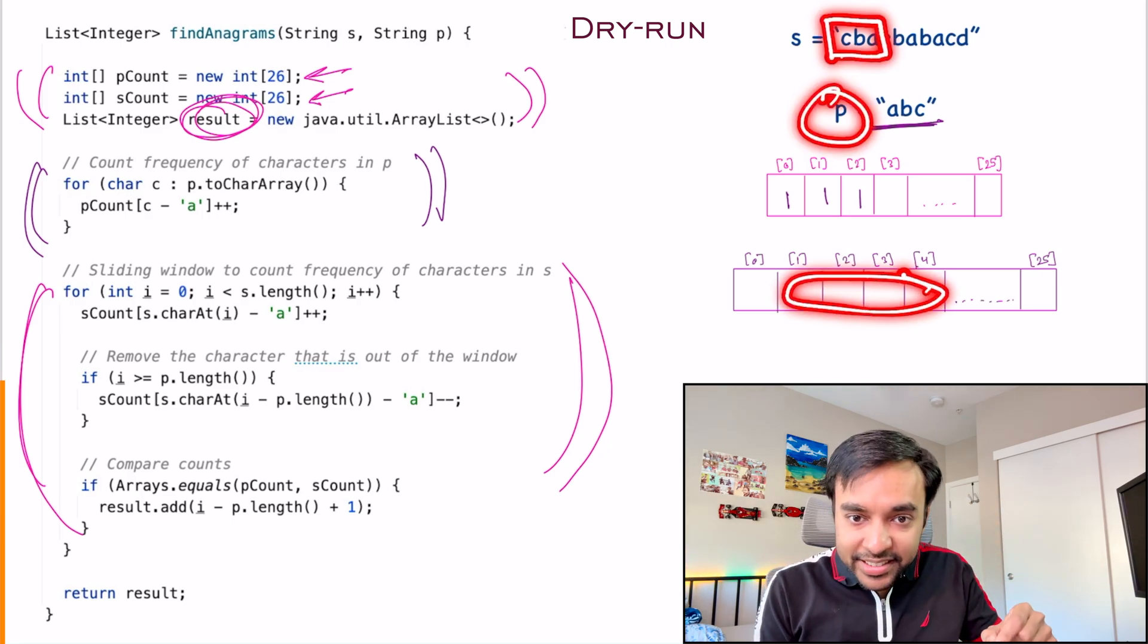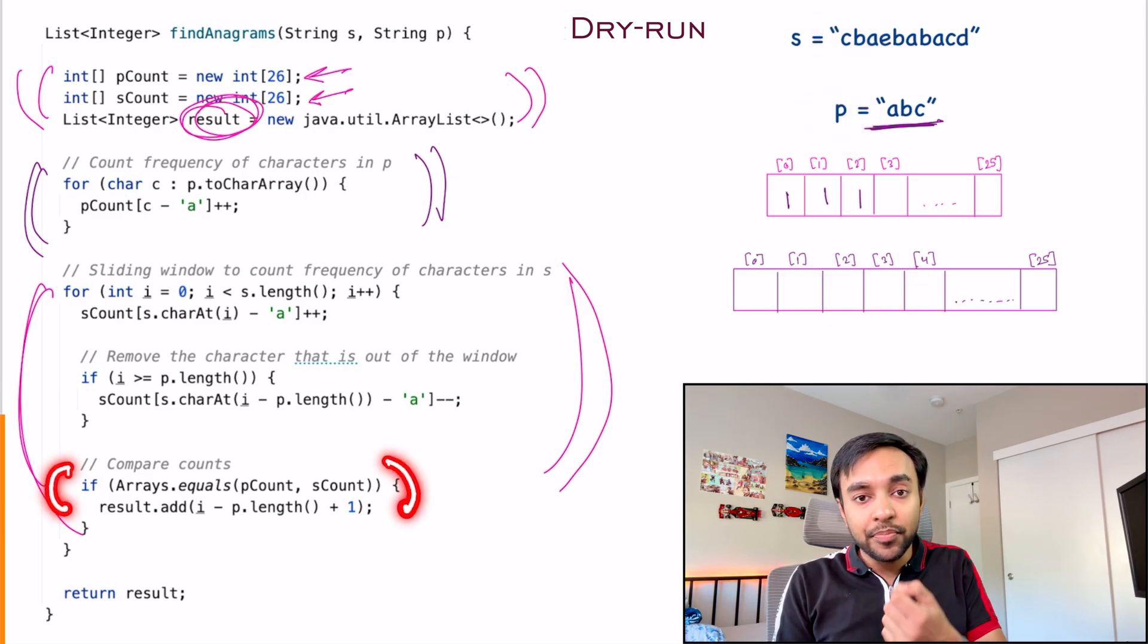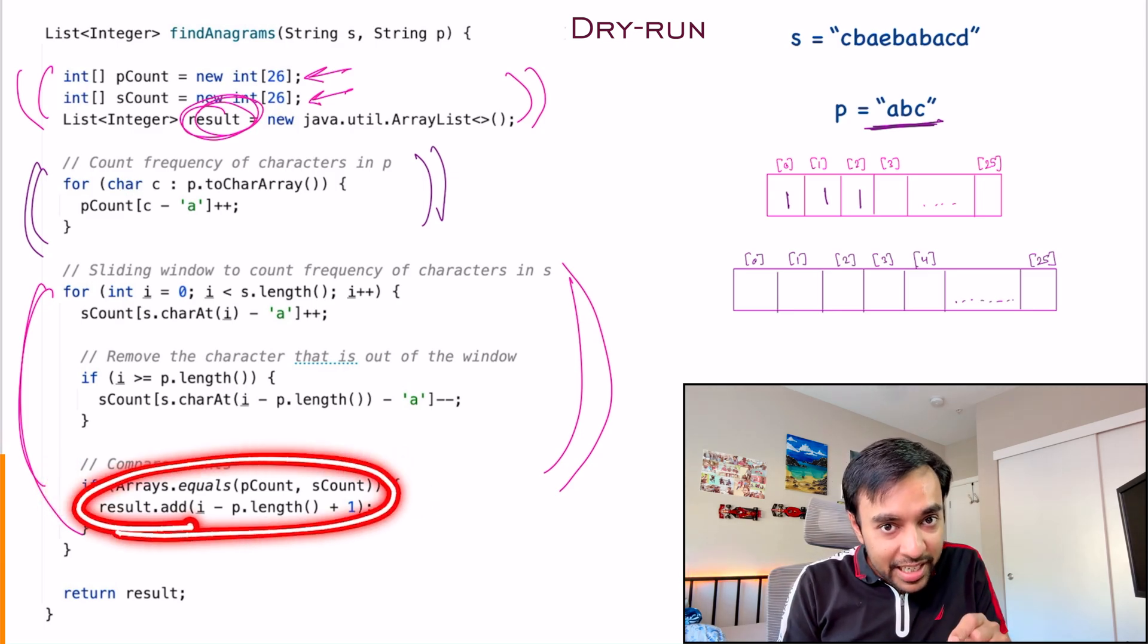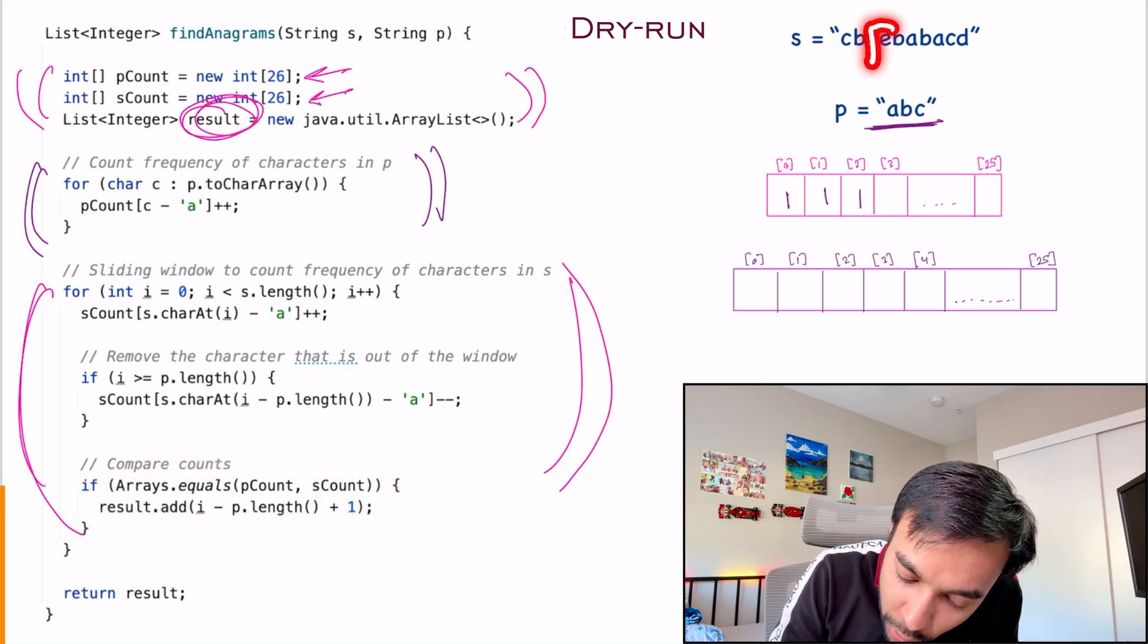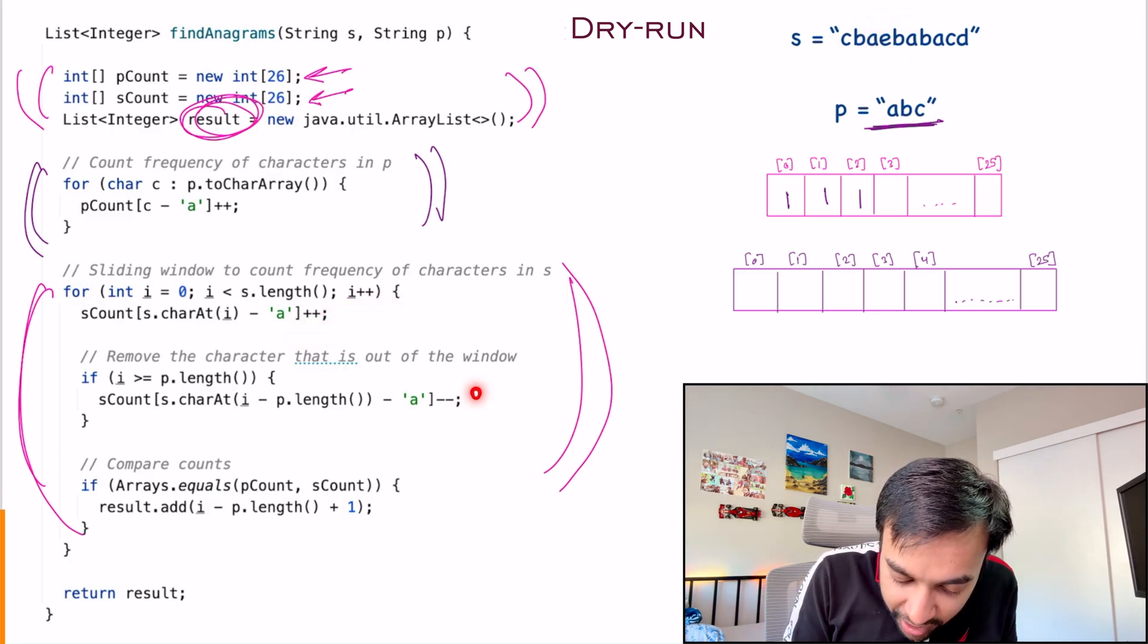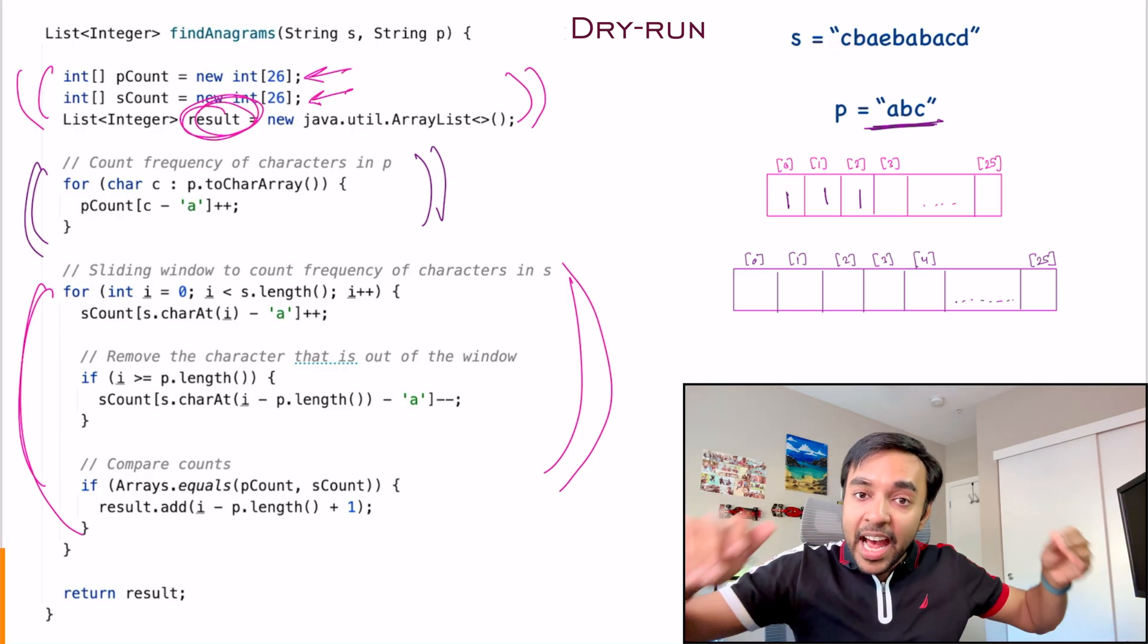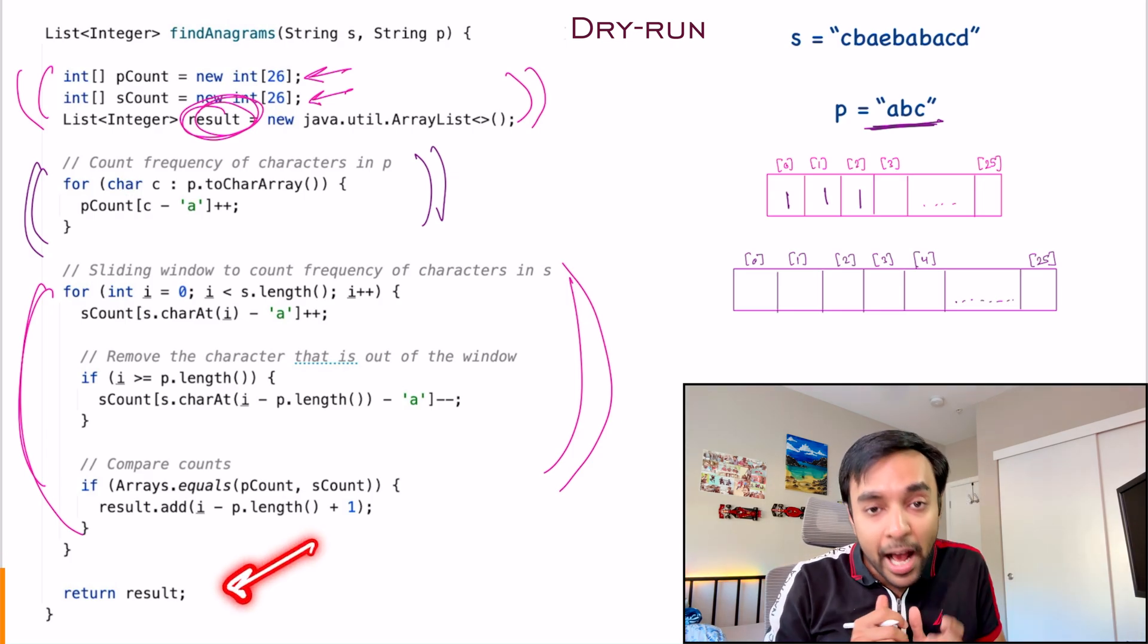What I will do is, I will populate this map. At any instance, if the frequency map of P and the string S, they become same, then I will add this particular index to my result list. Otherwise, what do I do? I add whatever the new character I get, I do a plus plus. And whichever character that I'm removing, I do a minus minus. This way, I will iterate over my entire string. And at the very end, I can return my result list that will have the answer.